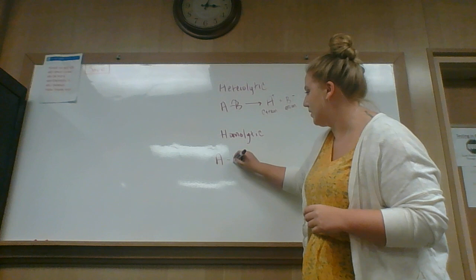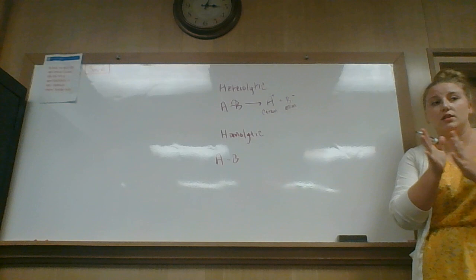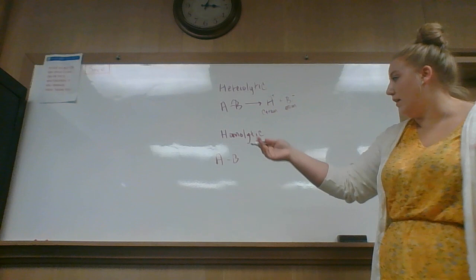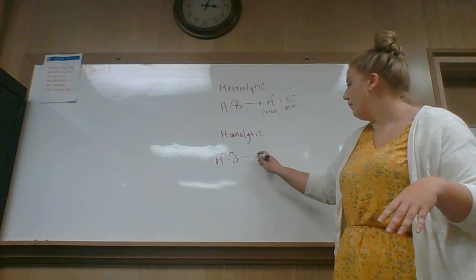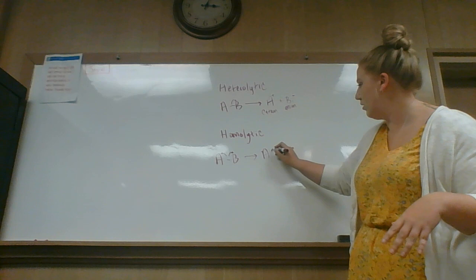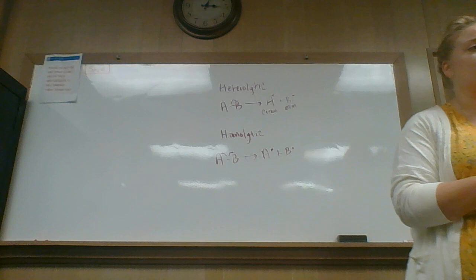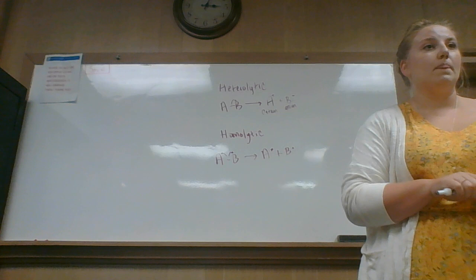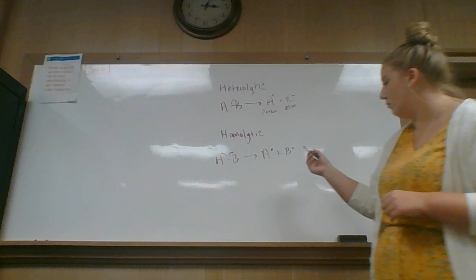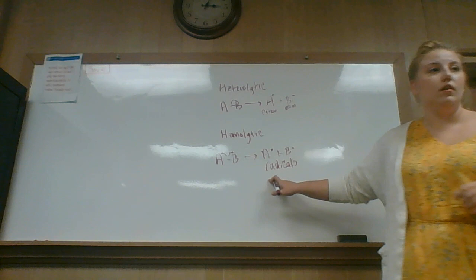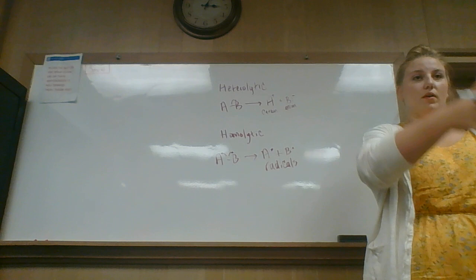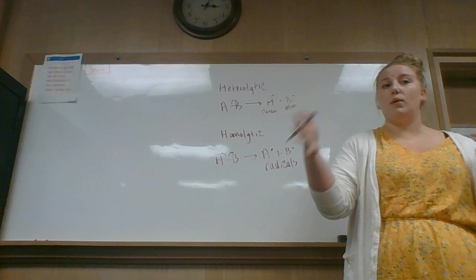Homolytic cleavage — homo meaning same — means the two products are the same. In this type of cleavage, instead of both electrons going to one atom, one electron goes to each. That's why you can see in the notes there are two arrows. Both of these products have one lone electron. What's the term for something that has one lone electron? Radical. So we have two radicals here. Homolytic cleavage: they both get one electron, they both get the same. Heterolytic: there's difference, so we have negative and positive ions.